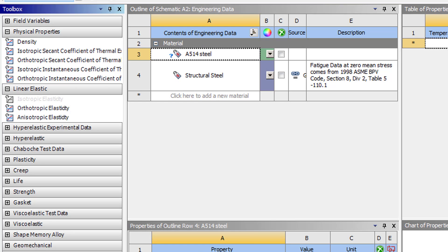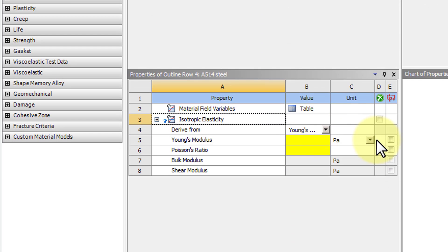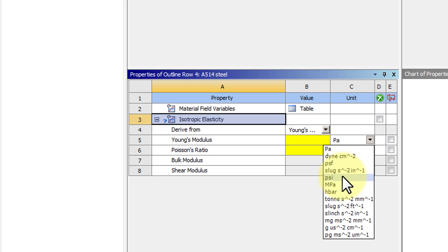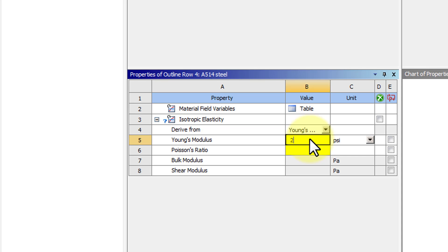And we want to set the Young's modulus in PSI, so I will set the unit here. And the value we are given is 29, 10 to the power of 6, or E to the power of 6.